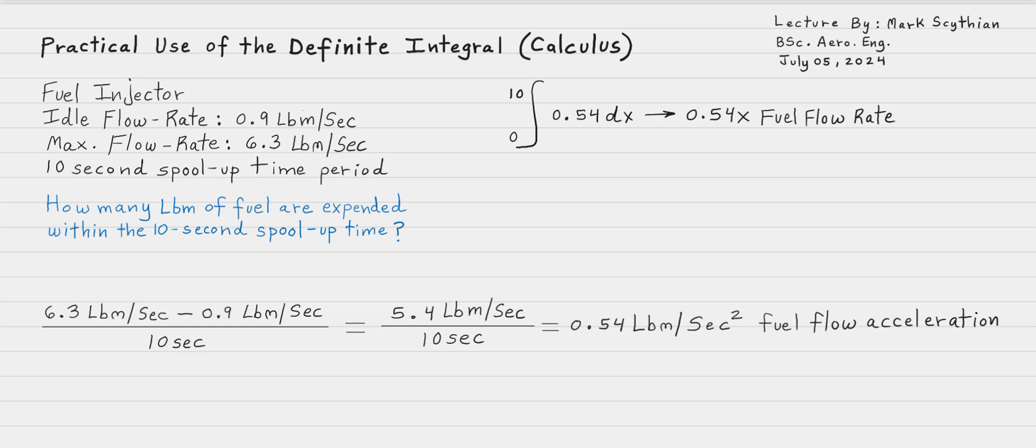This then just equates to 0.54x. We're not talking about the change in the rate, like the acceleration, but just the fuel flow rate over the function of time. If we were to calculate what the flow rate was at 2 seconds, we could just place 2 into x and multiply 2 times 0.54, which would get about 1.08 pounds per second at the 2-second time marker.